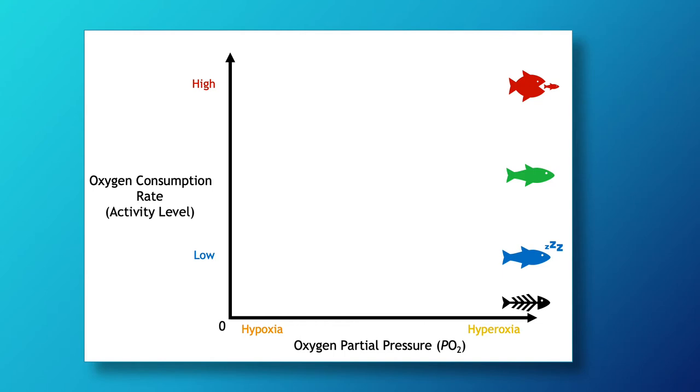First, imagine that there is an animal in a chamber that is swimming as hard as it can against a swift current. This mimics exhaustive exercise in nature, such as when the animal may be hunting or evading a predator. As oxygen decreases, there will be some point when the animal can no longer maintain its swim speed and its metabolic rate will decrease despite being at maximum exertion.